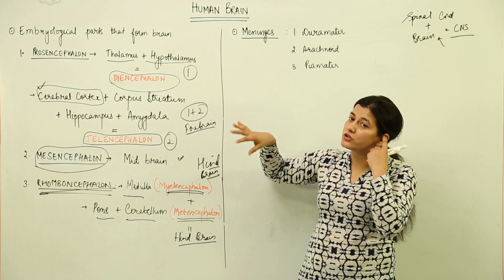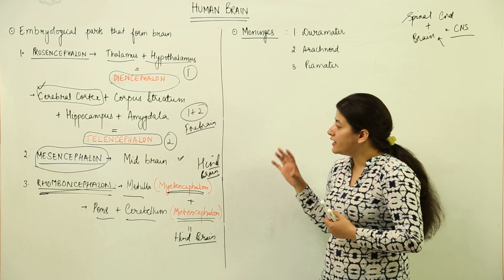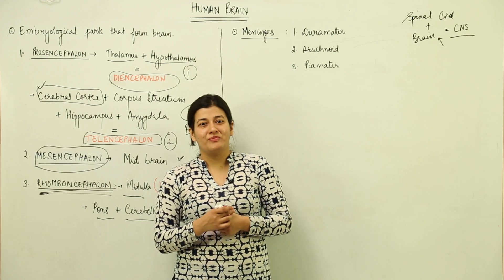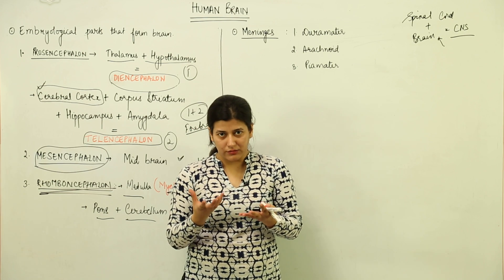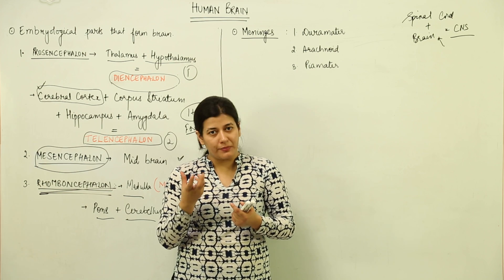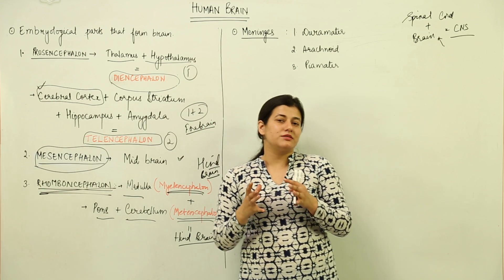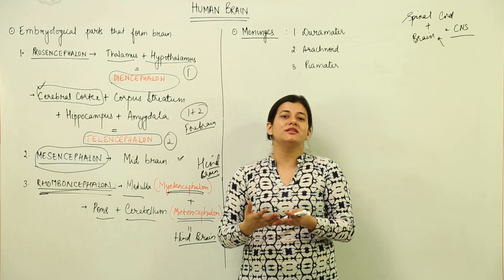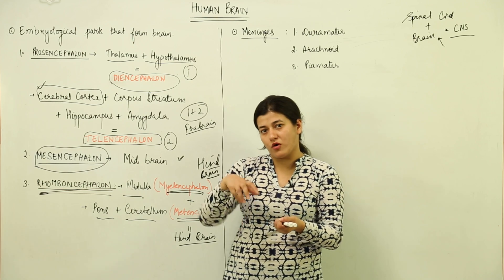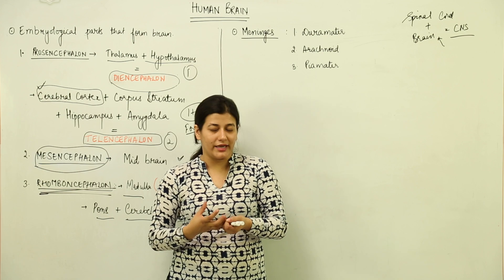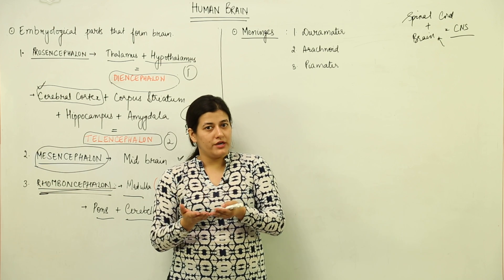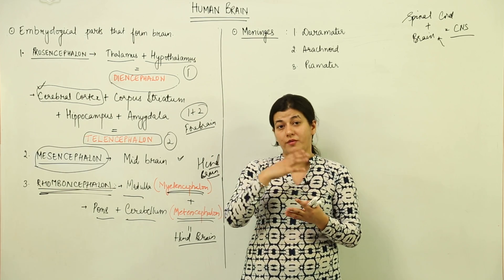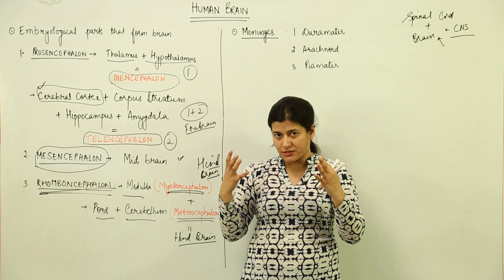Now the next topic is the structure of the human brain. You must have seen a walnut — our brain is somewhat like that, but a pinkish walnut. The brain has a lot of wrinkles — as many wrinkles as you can think of. It is better to take out a walnut right now and observe it, as it gives a good idea of what the brain looks like.